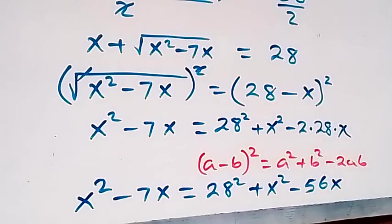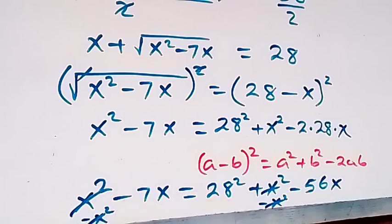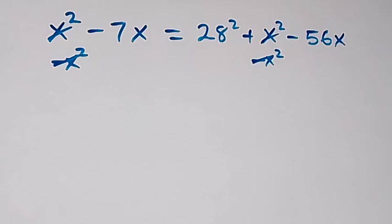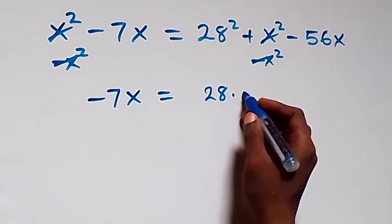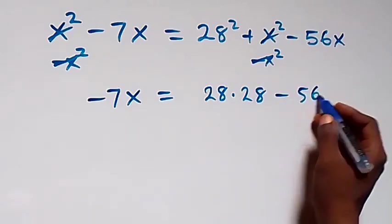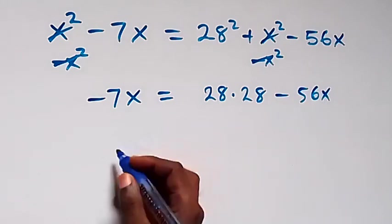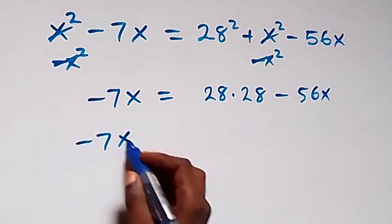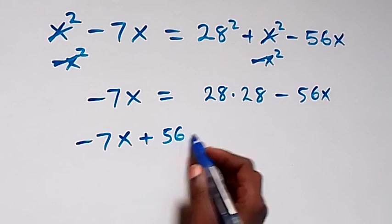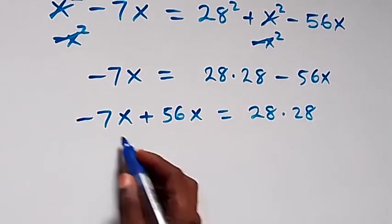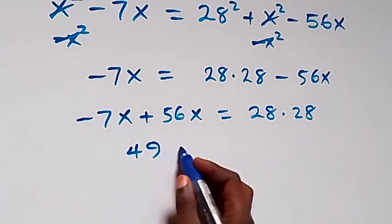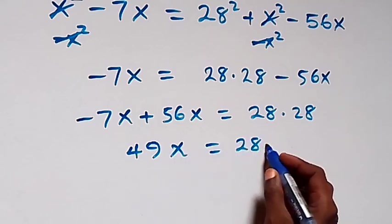Subtracting x squared from both sides, the x squared terms cancel out, leaving minus 7x equals 28 times 28 minus 56x. Moving minus 56x to the left gives minus 7x plus 56x equals 28 times 28, so 49x equals 784.